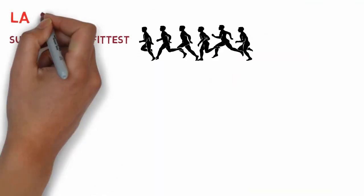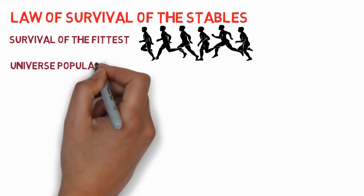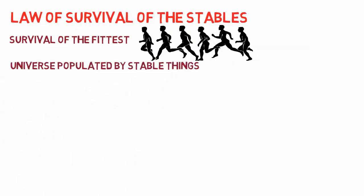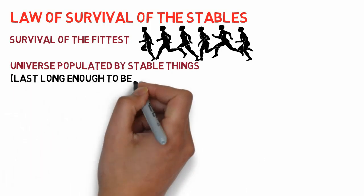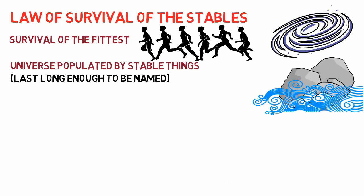Darwin's survival of the fittest is a special case of what can be called the law of survival of the stables. The universe is populated by stable things—collections of atoms that last long enough to be worth naming. Dawkins gives some examples such as rocks, galaxies, ocean waves as stable patterns of atoms, and hemoglobin molecules as more complex configurations.